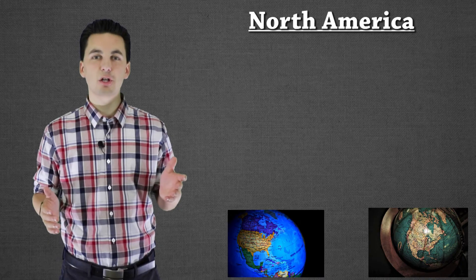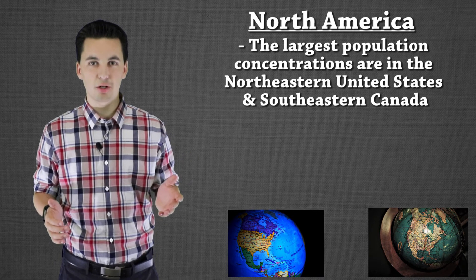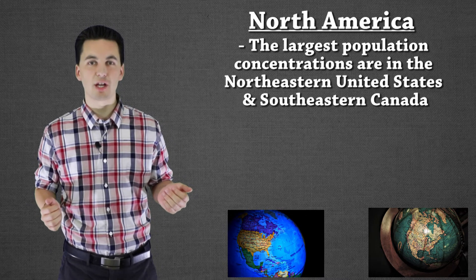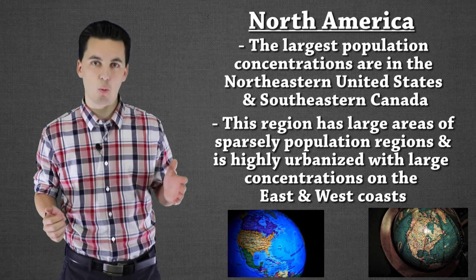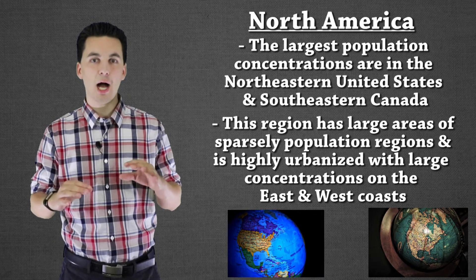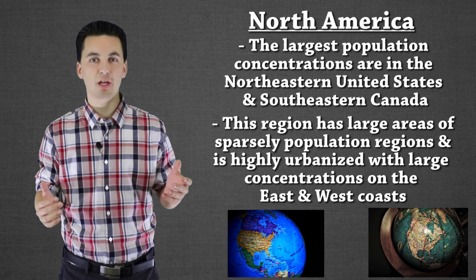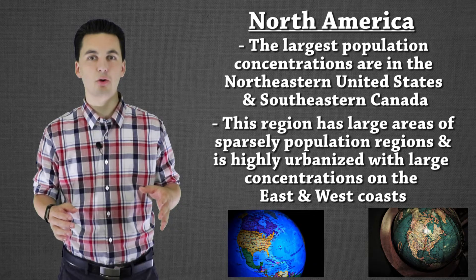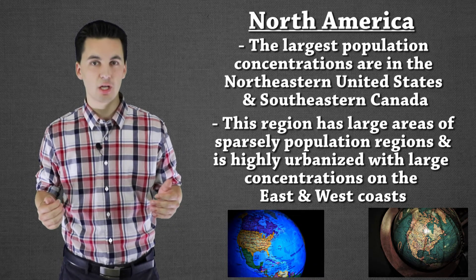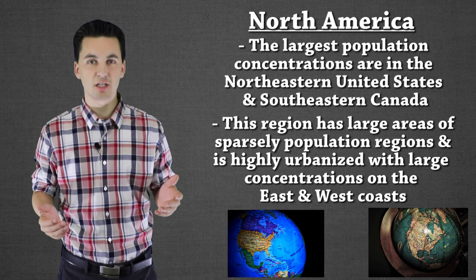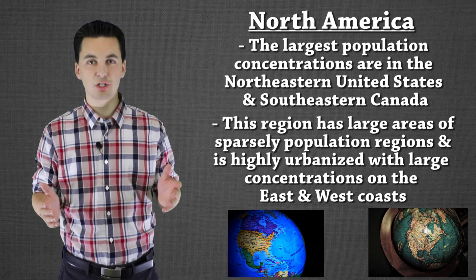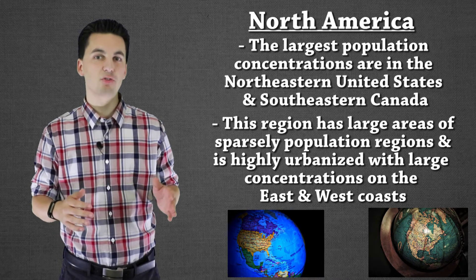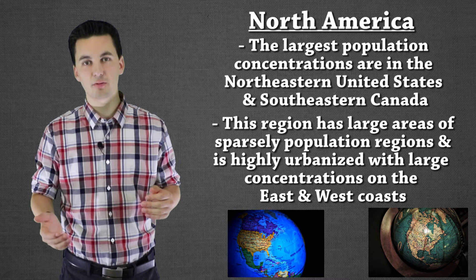For North America, the majority of people actually live in the northeastern part of the United States or the southeastern part of Canada. The east and west coastlines have the highest concentration. Throughout the United States and Canada, as you go more inland, people are pretty sparsely distributed. We still see population clusters around riverways that connect out to the ocean — that's where you'll see some of the bigger cities. This area is pretty urbanized, with a lot of economic growth and a shift away from agriculture into more industrial and service jobs.